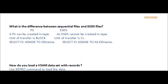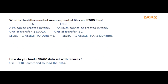Question: What is the difference between sequential files and ESDS files? Answer: A PS file can be created on tape; an Entry Sequential Data Set cannot be created on tape. The unit of transfer is block in PS, and control interval in ESDS. The Select statement in COBOL for a physical sequential file is: SELECT F1 ASSIGNED TO DD-name. For an entry sequential data set it is also: SELECT F1 ASSIGNED TO DD-name.